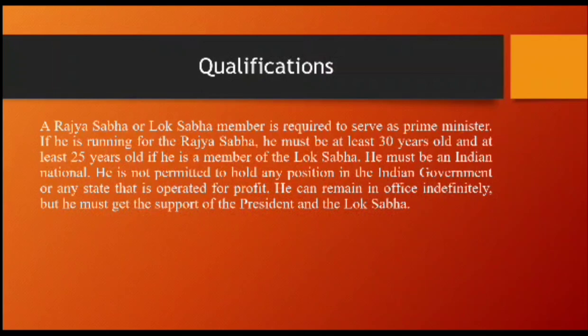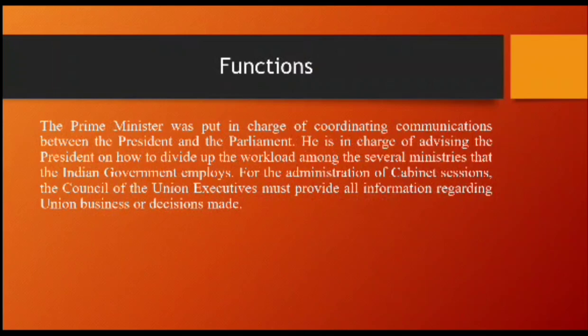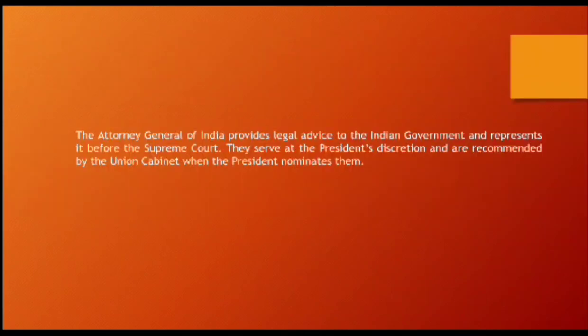The Prime Minister is in charge of coordinating communications between the President and the Parliament. He advises the President on how to divide up the workload among the several ministries. The Attorney General of India provides legal advice to the Indian government and represents it before the Supreme Court. They serve at the President's discretion and are recommended by the Union Cabinet when the President nominates them. The Attorney General works as a central power, while the Advocate General works as a state power.